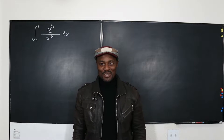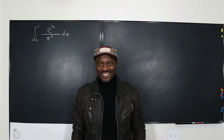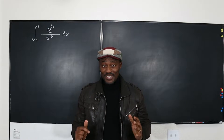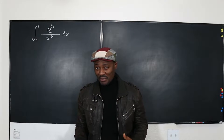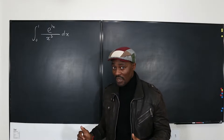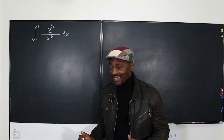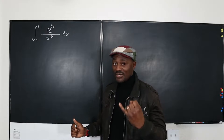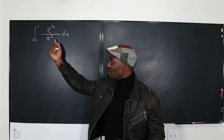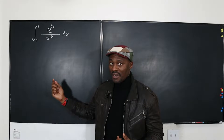Hello, and welcome to another video. This is another integration problem, and as you can see, there are two functions of x. You've got e to the 1 over x, and you've got x cubed under.